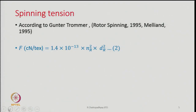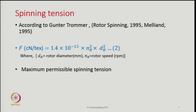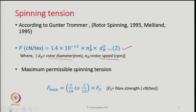According to Gunter Trommer in the book 'Rotor Spinning', the spinning tension is given by: T = 1.4 × 10⁻¹³ · nᵣ² · dᵣ², where nᵣ is the rotor speed in revolutions per minute and dᵣ is the rotor diameter in millimeters. These units are those commonly used in industry, and from this equation one can estimate the spinning tension.